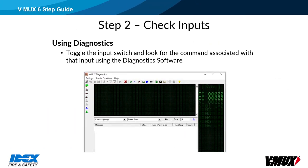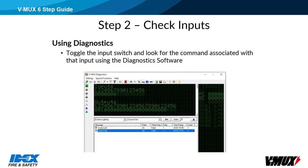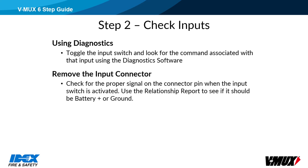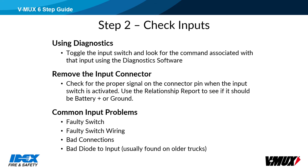Step 2: Check inputs. Toggle the input switch and look for the command using the VMux Diagnostics software. If you see the command, then the input is working. If you do not see the command, further troubleshooting is required. Use a multimeter or test light to check for proper signal to the input pin. See the relationship report to determine if it's a ground or battery plus signal. Common problems include faulty switches, faulty wiring, bad connections, or possibly a bad diode if it is an older truck. Earlier versions of the Hercules node did not have programmable inputs and would be enabled with either a ground or battery signal. Builders would sometimes put a diode in line with the switch to make it ground only or battery only. Generally, an input diode failure would be a broken lead, not a burned out diode.